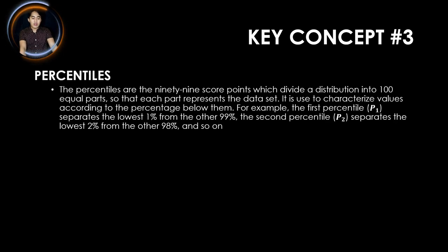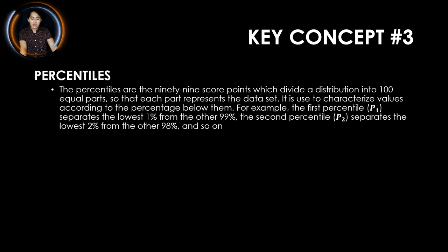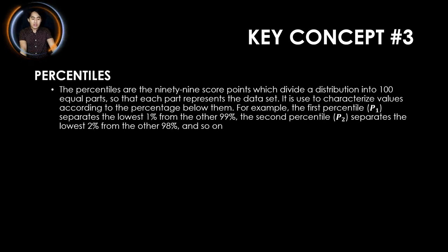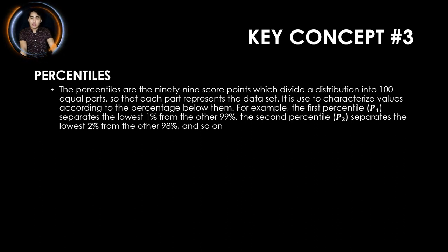Our key concept number three is the percentiles. The percentiles are the 99 score points which divide a distribution into 100 equal parts, so that each part represents the data set. It is used to characterize values according to the percentage below them. For example, the first percentile or P sub 1 separates the lowest 1% from the other 99%. The second percentile or P sub 2 separates the lowest 2% from the other 98%, and so on.